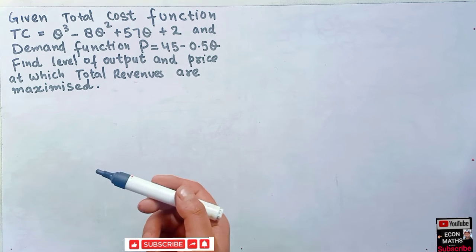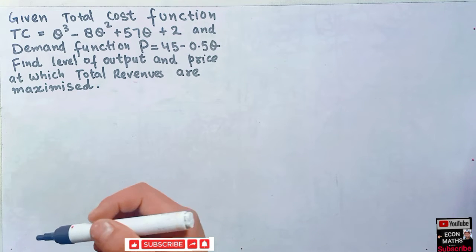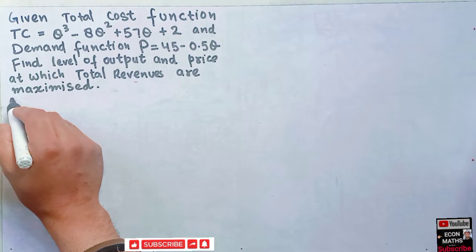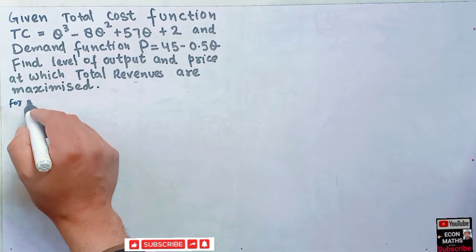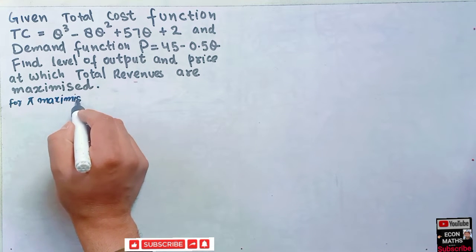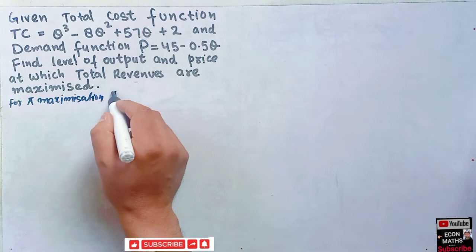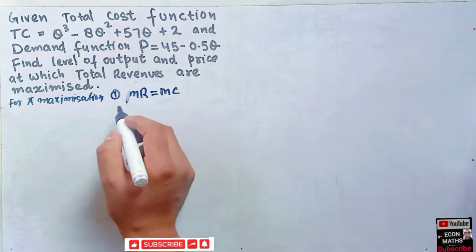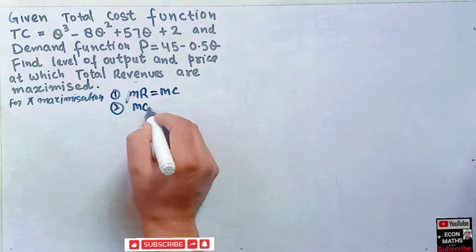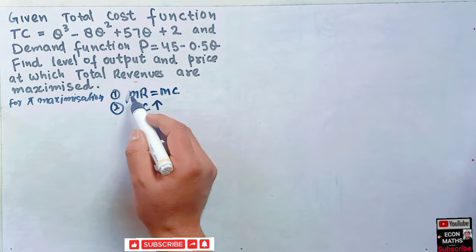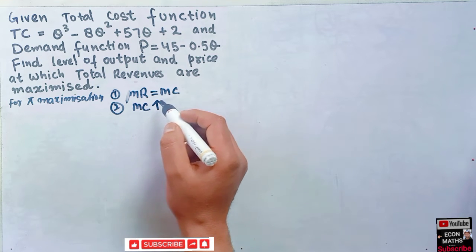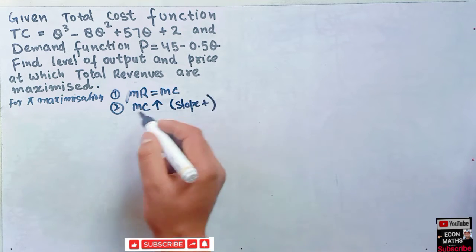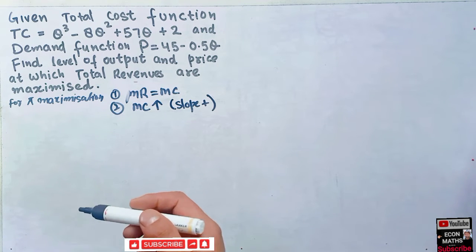We have to find the optimal level of output and price where total revenues are maximized. We should be aware that for profit maximization there are two conditions: first, marginal revenue should be equal to marginal cost; and second, at the intersection of marginal revenue and marginal cost, the marginal cost curve should be rising — that is, its slope should be positive.